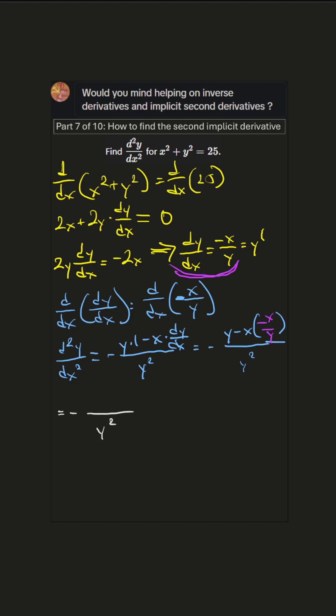So we have y plus x² over y. Now we can find a common denominator in the numerator and that'll be y. So we'll get y² plus x² over y.